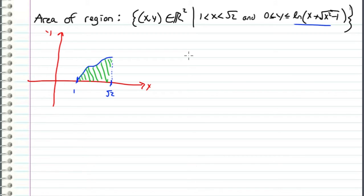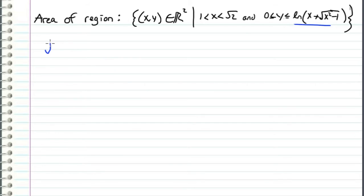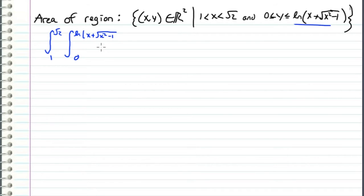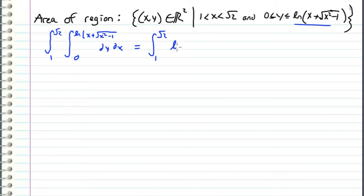The way that we're going to find that is first by integrating with respect to y from the lower boundary up to the function boundary. Then we're going to integrate with respect to x from 1 to square root of 2. So let's set this up as a double integral with limits from 1 to square root of 2, and inner limits from 0 to natural log of x plus square root of x squared minus 1, dy dx. Integrating with respect to y first just gives us y evaluated at those limits, so the integrand becomes ln of x plus square root of x squared minus 1, dx.